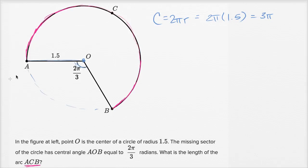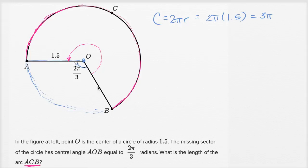There are a couple of ways you could do it. You could figure out the length of the missing arc and then subtract that from the circumference, and then you'd be left with the magenta part. Or we could figure out the central angle of the magenta part — we could figure out this angle — and think about what fraction that is if we were to go all the way around. If we're thinking in radians, going all the way around is two pi radians. So what fraction is this angle of two pi, and that's going to be the same fraction that this arc is of the entire circumference.